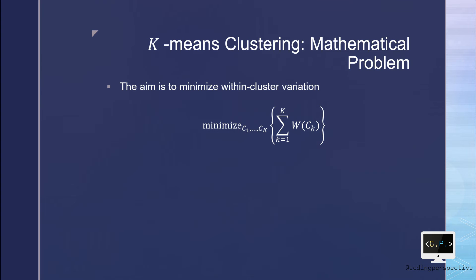In words, this objective tries to partition the observations into K distinct clusters in a way that the total within-cluster variation summed over all clusters is as small as possible.